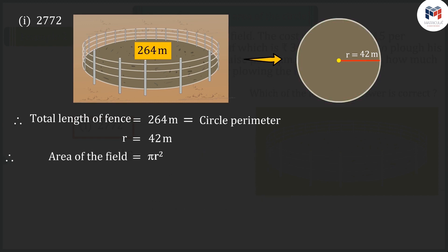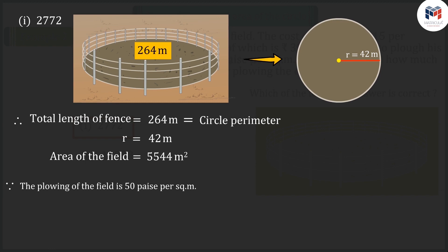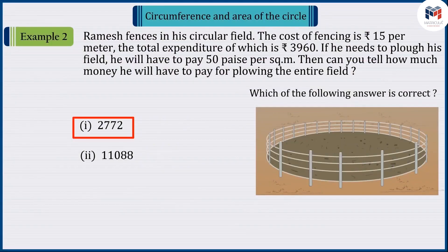Since we have to find the total expenditure for ploughing the field, we need the area of the field. Substituting the value of R into the formula for the area of the circle, the area of the field is 5,544 square meters. Since ploughing costs 50 paise per square meter, Ramesh will have to pay 2,772 rupees. Hence, option 1 is the correct answer.